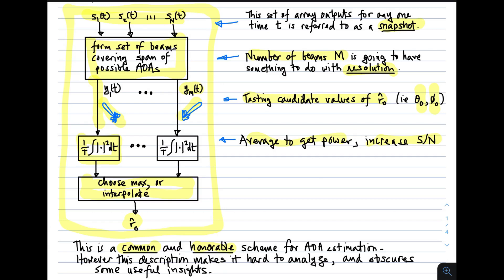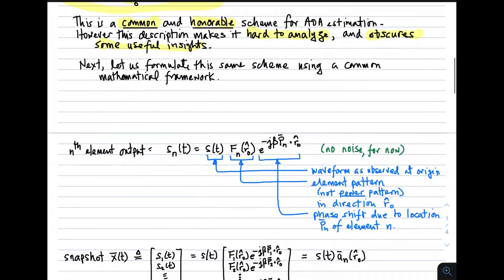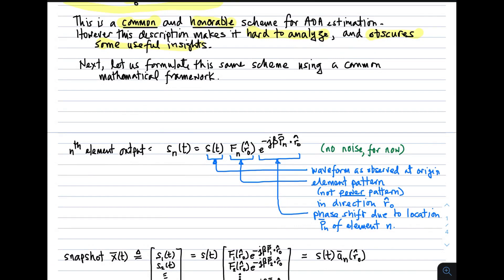Let me note here that this is a common and honorable scheme for angle of arrival estimation. Many systems operating in practical applications use precisely this procedure or some variant of it, because it is simple and robust. However, there are limitations. The immediate issue is that this description of the procedure is a little hard to analyze. It's hard to know mathematically how this should perform, and it obscures some useful insights.